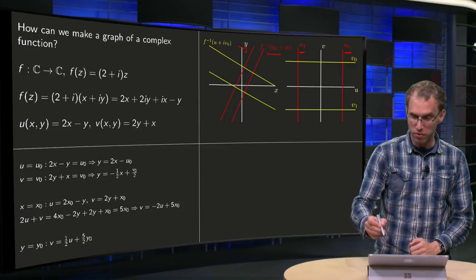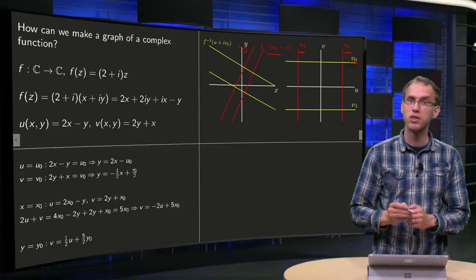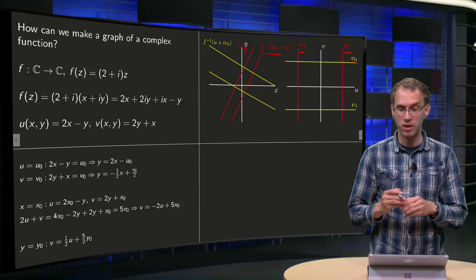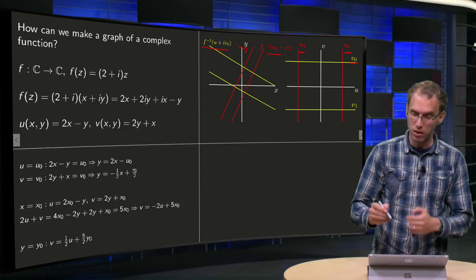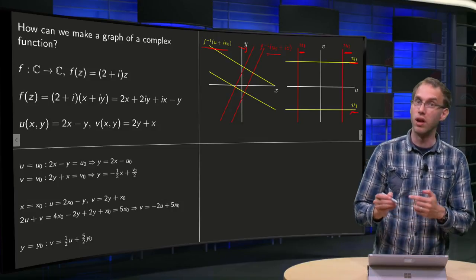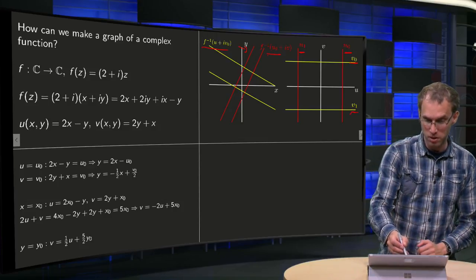And then for the other ones, if v equals v₀ constant, you also get lines, but now with a negative slope, so this one over here. And if you take another constant v, so v₁, you get another line, which is in this case a bit lower.